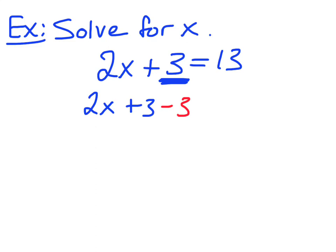2x plus 3 minus 3 is equal to 13 minus 3. And if you do the same thing to both sides, it's really hard to make a mistake. So then these cancel because 3 minus 3 is 0, so those are gone. So I'm left with 2x is equal to 10.